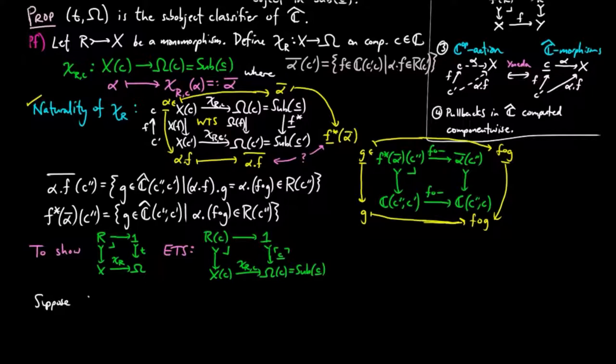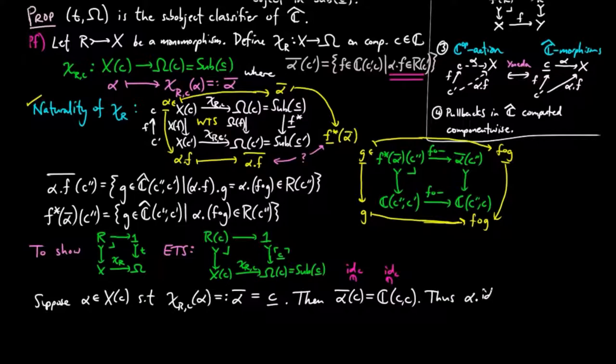So suppose alpha is a C figure of X, such that alpha bar is equal to the representable pre-sheaf on C. Then alpha bar C is equal to the endomorphisms in C of object little c, and so contains in particular the identity of little c. Thus, by definition of alpha bar, we have alpha as a C figure of R.